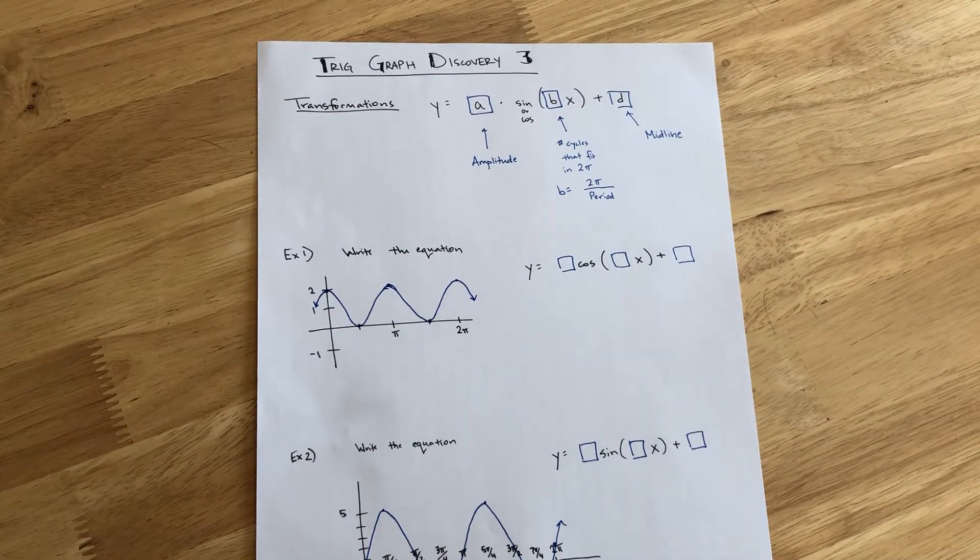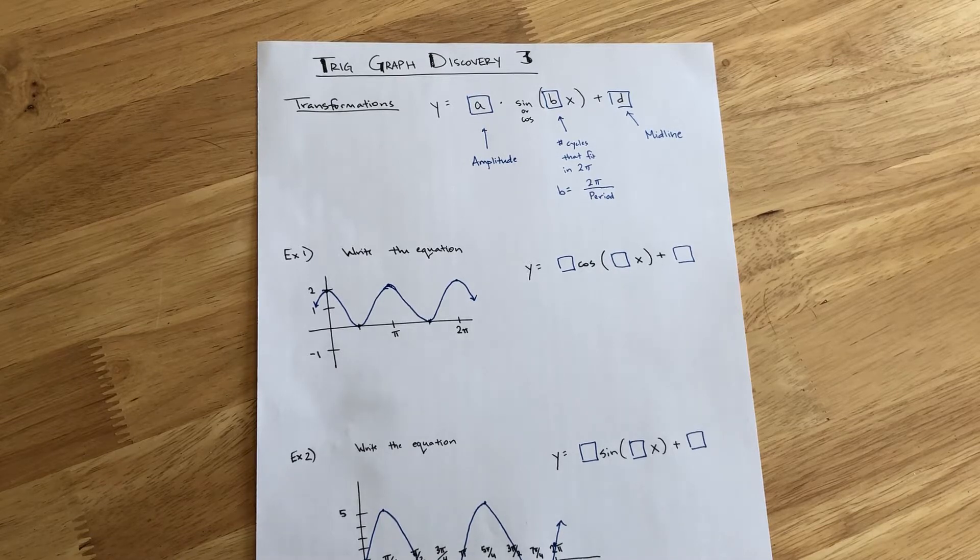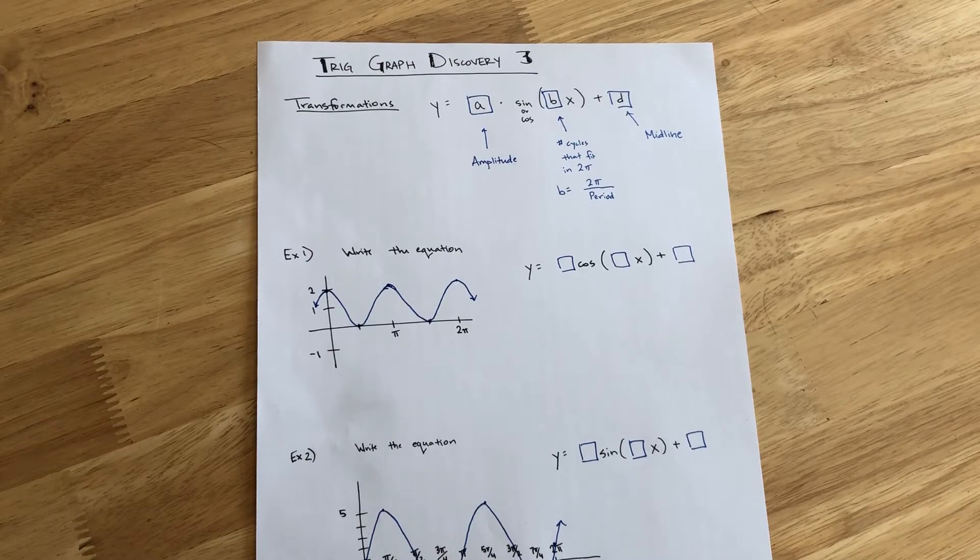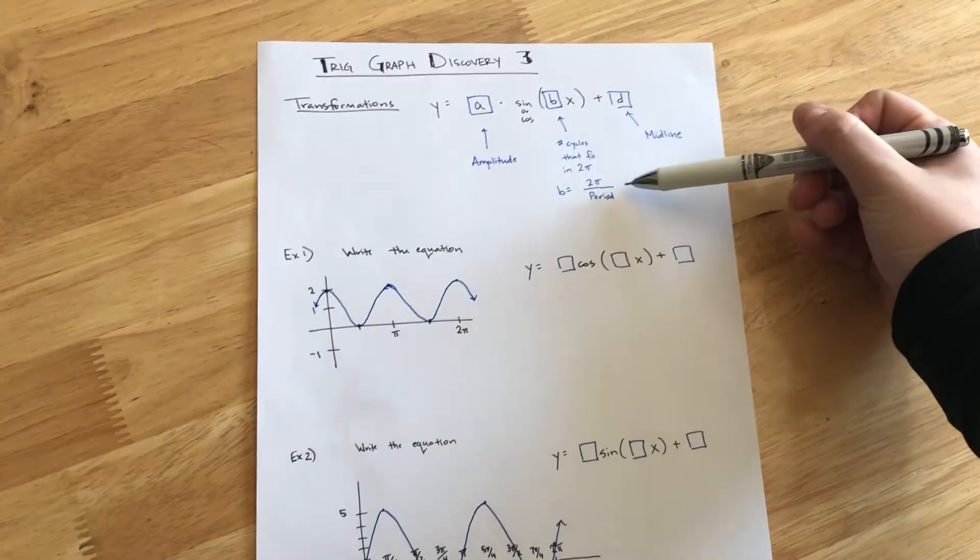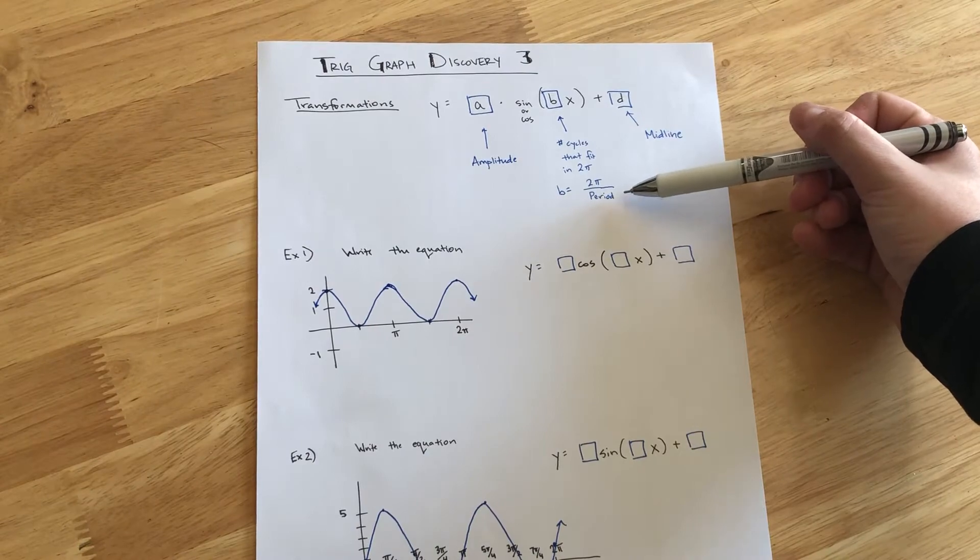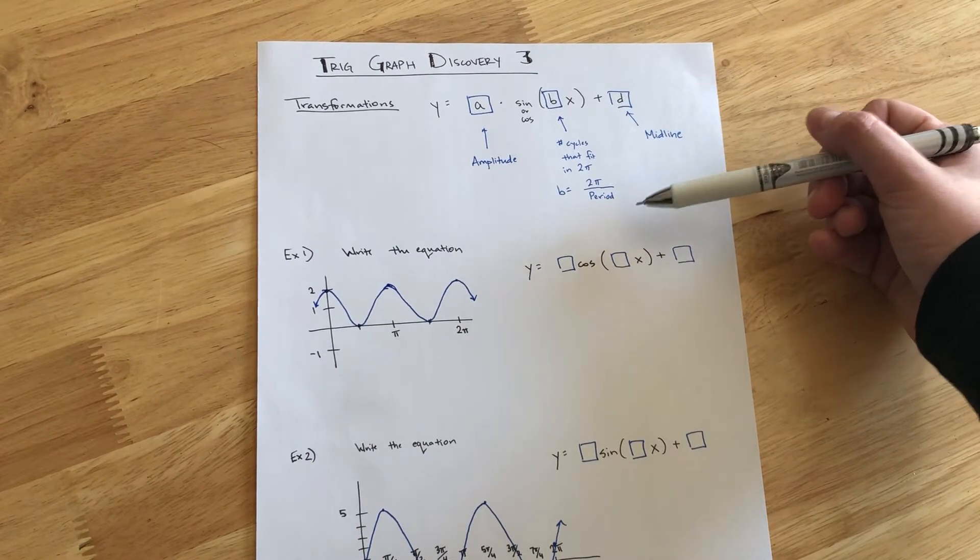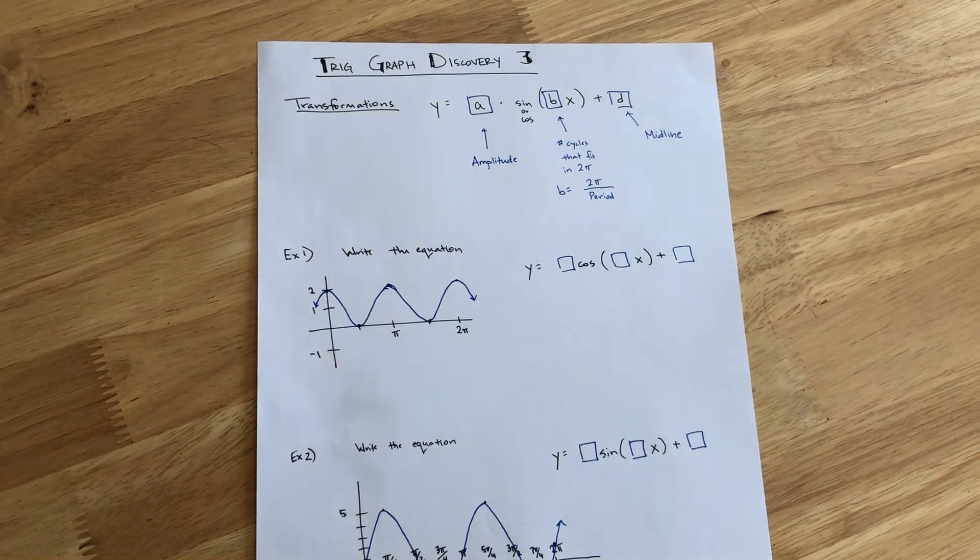Now, we saw yesterday that the period of a function can change. It can be different. And so, we need to know how to find that B parameter. Well, there is a formula that we can use. The B parameter is equal to 2π divided by the period of the graph.